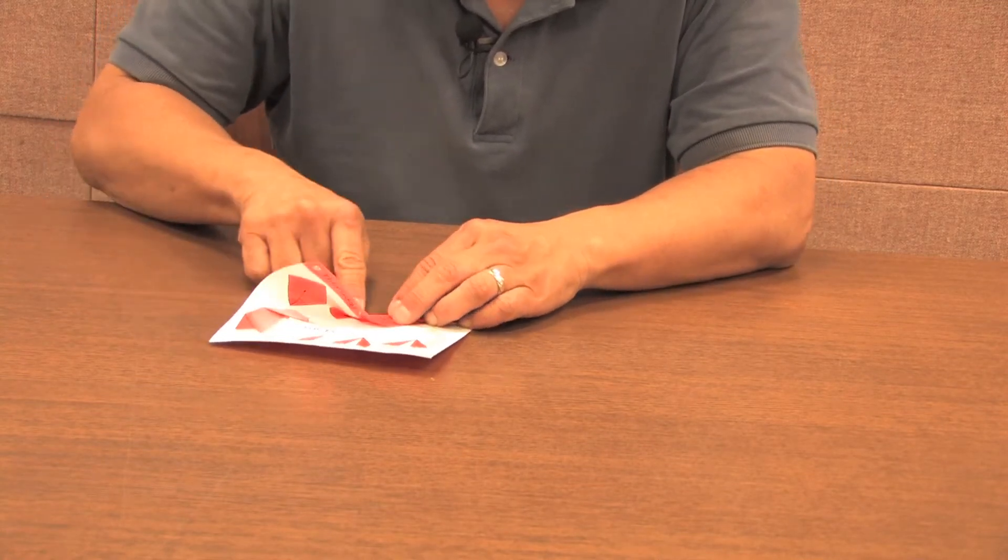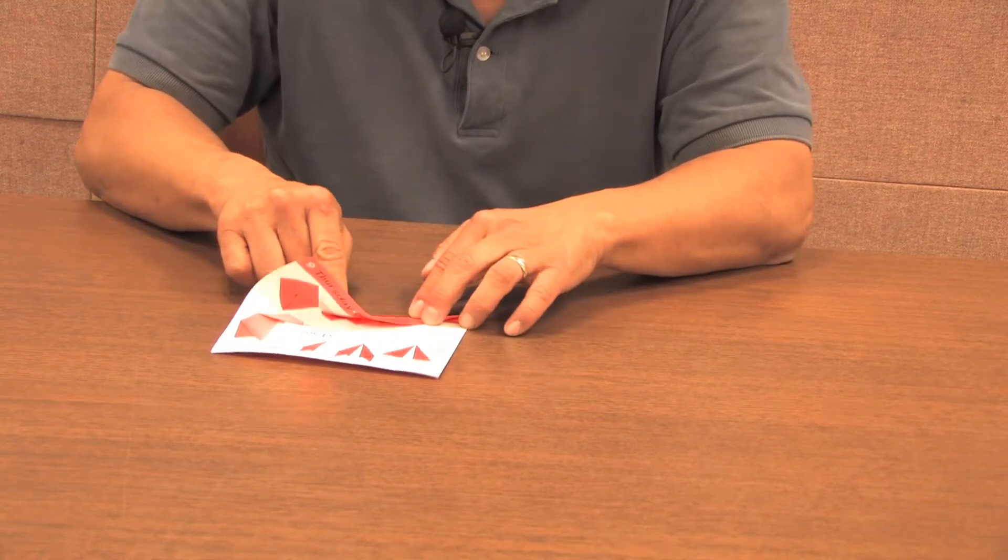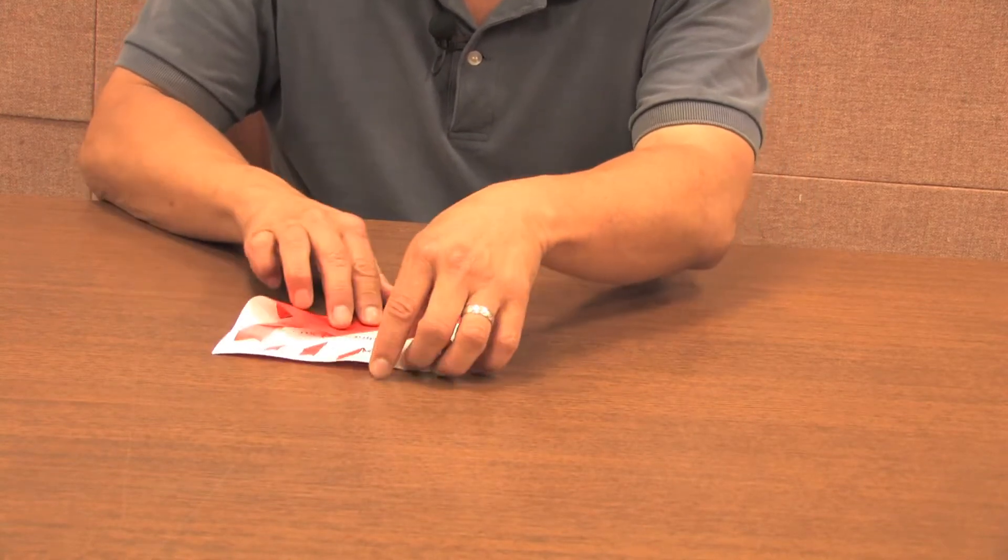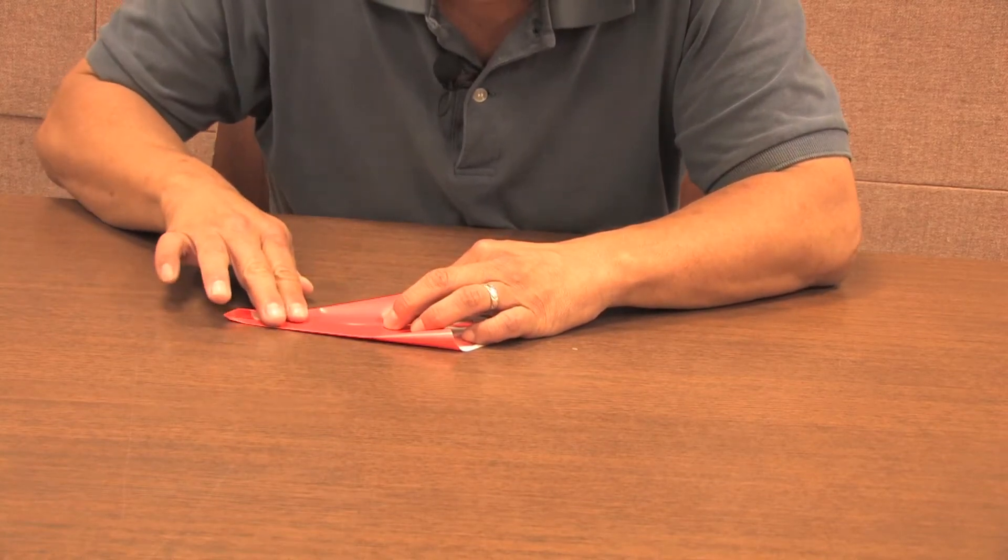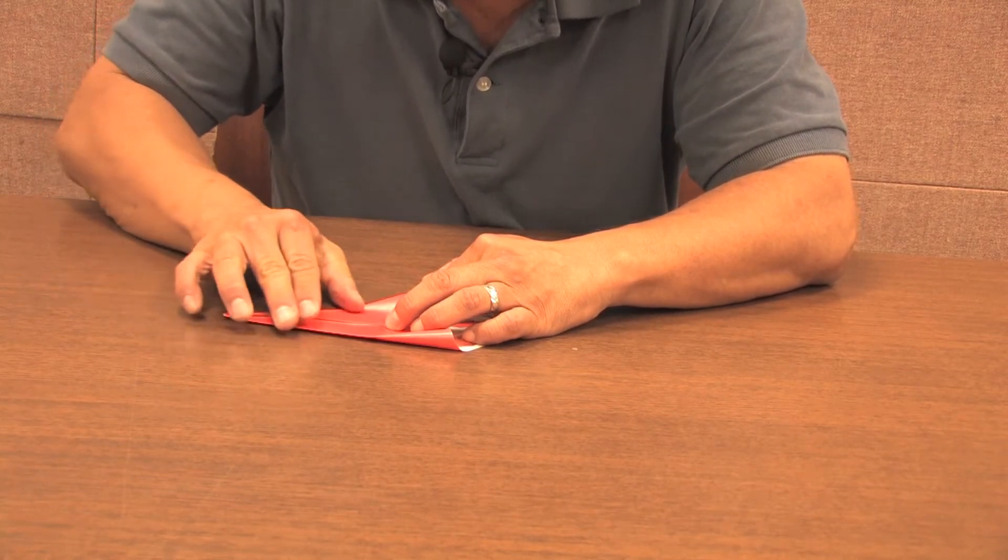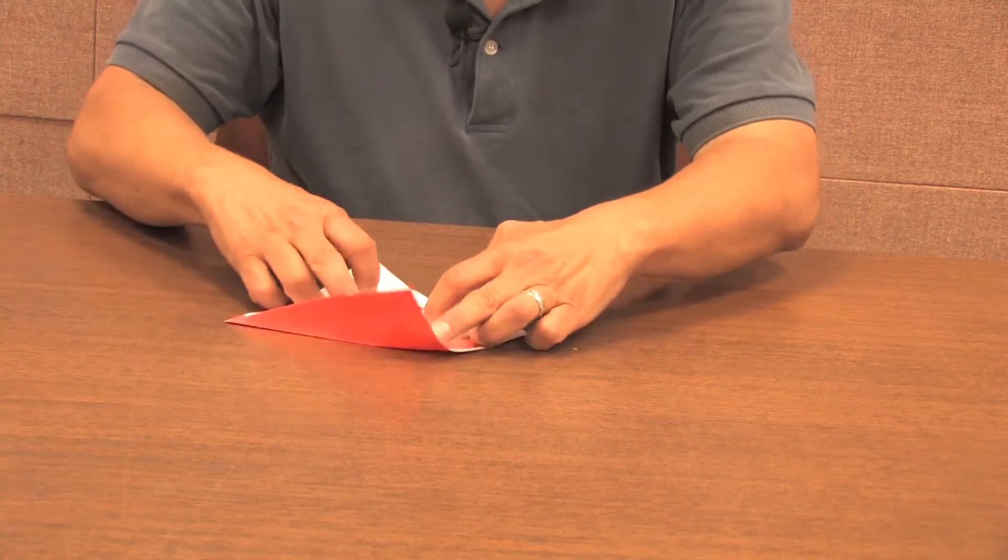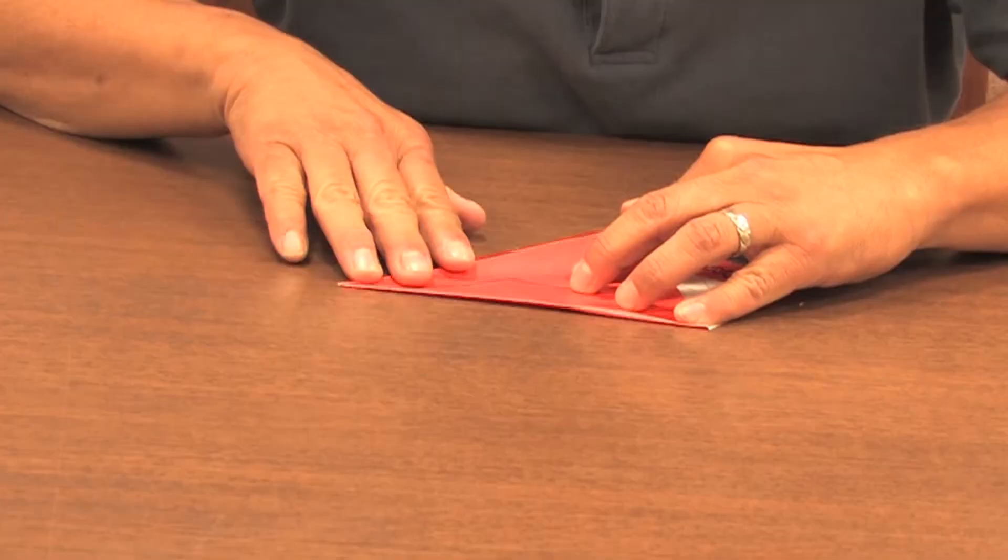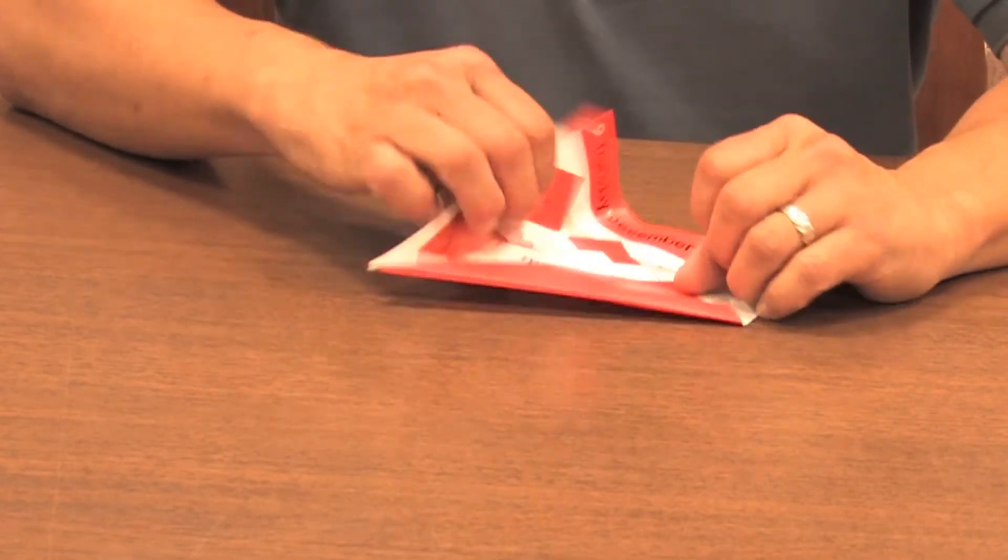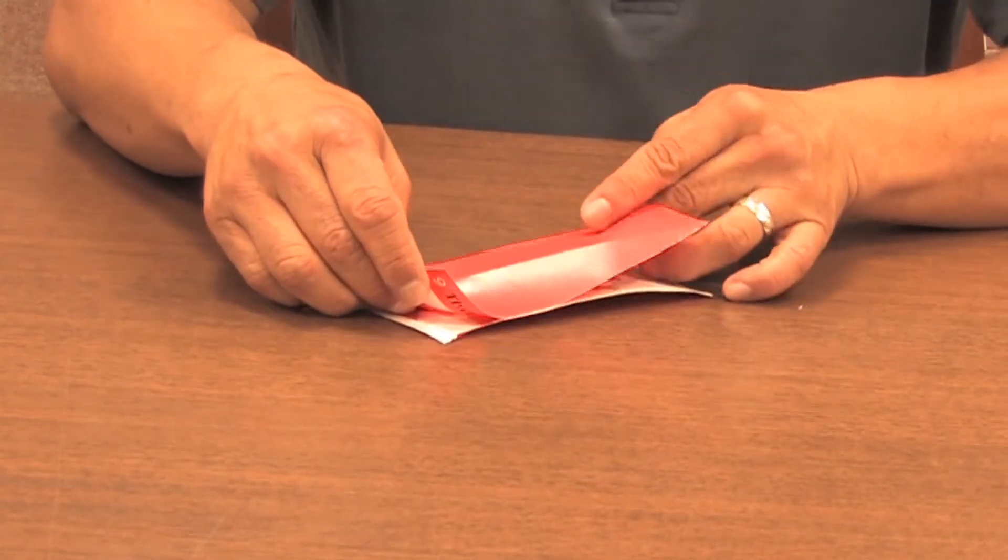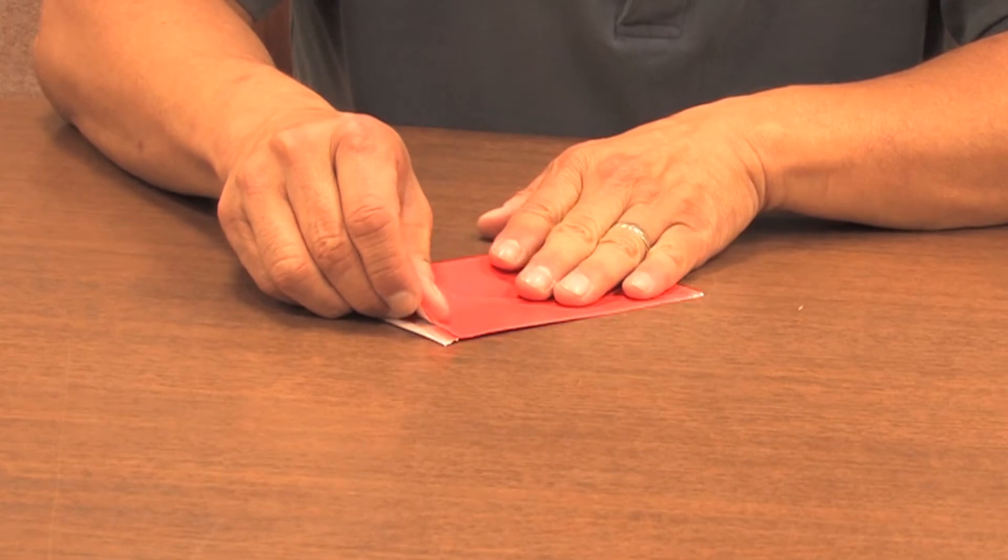And we actually only have to crease it up to about this point. You don't want to do that in both directions. And then we're going to fold it into a rectangle in both directions.